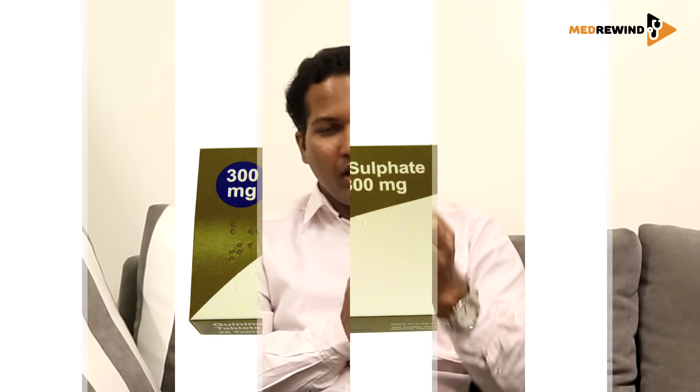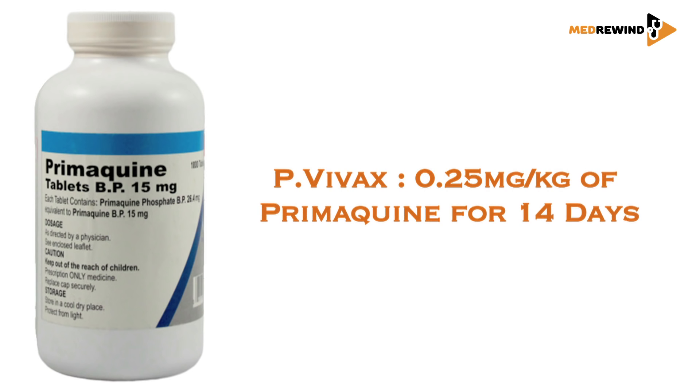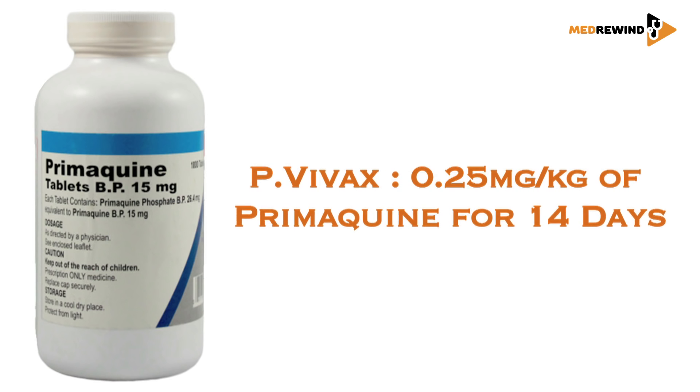For mixed malaria (both falciparum and vivax), treat as falciparum but also give an additional 14 days of primaquine for radical treatment of vivax, over and above the primaquine given as part of the falciparum primary treatment. The doses differ: for the primary falciparum treatment, primaquine is 0.75 mg/kg as a single dose; for the vivax radical treatment, it is 0.25 mg/kg per day for 14 days.